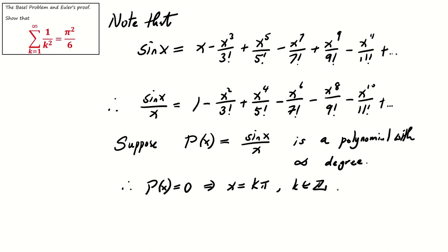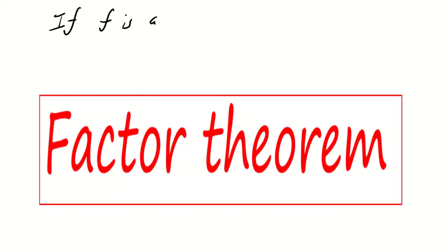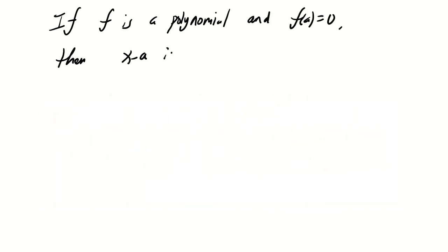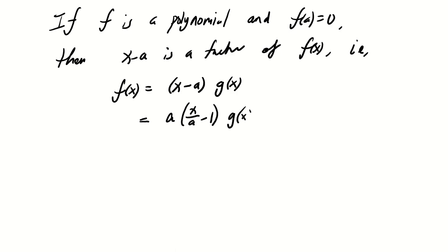Before we proceed, let us look at some background results that we need. This follows from the factor theorem, which says that if f is a polynomial and f(a) equals 0, then (x minus a) is a factor of f(x). Namely, f(x) equals (x minus a) times another polynomial g(x). We can modify the factor (x minus a) and write it as a times (x over a minus 1), and furthermore as negative a times (1 minus x over a).